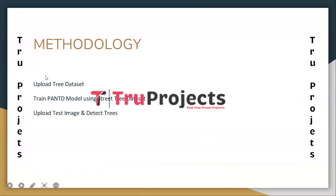The second module is Training the PA and TD model using the street tree dataset. This module involves training the Part Attention Network and Tree Detection model using the street tree dataset. The dataset consists of labeled images of trees used to train the PA and TD model to recognize and classify different types of trees accurately. The ResNet architecture forms the foundation of the PA and TD model, enhancing its detection capabilities.